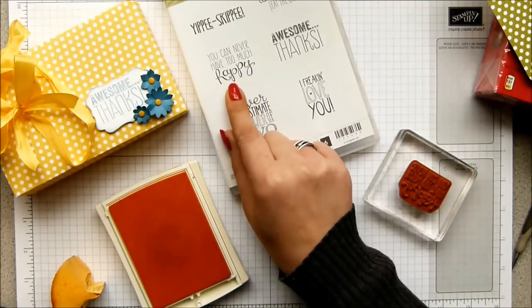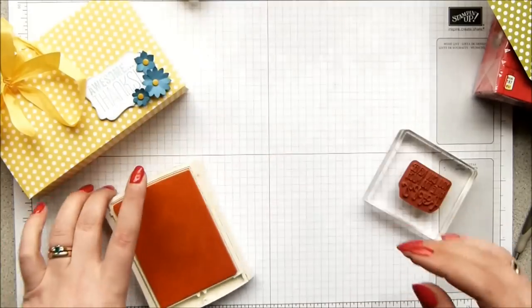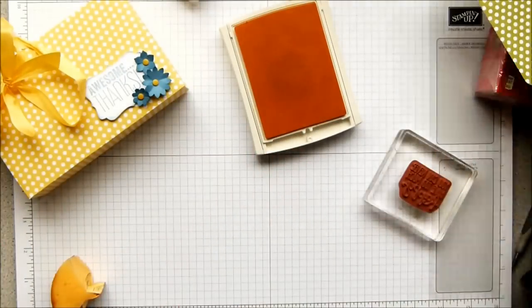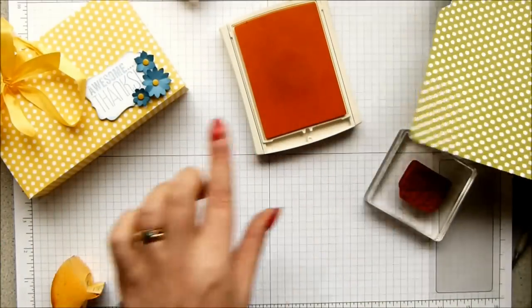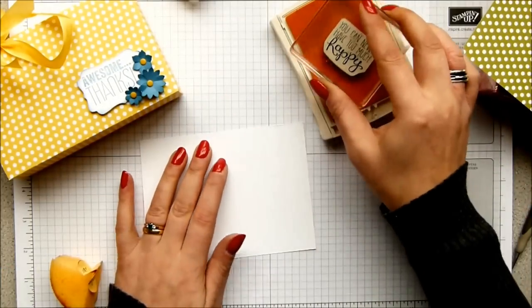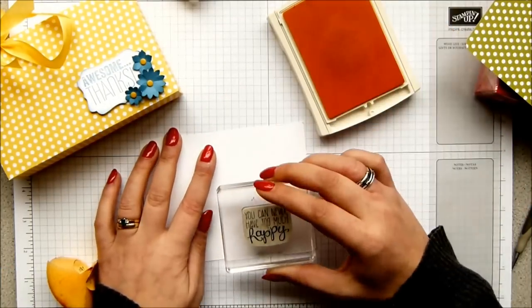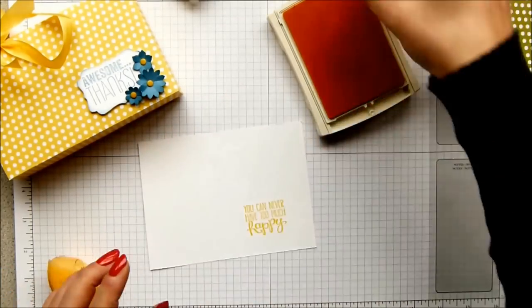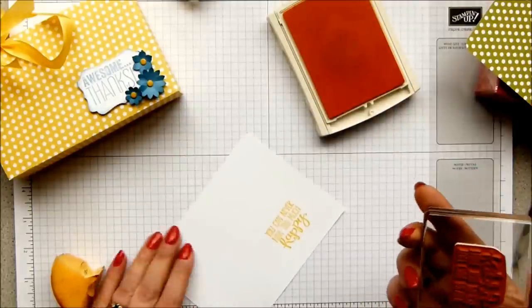So I chose Yippee Skippy because it's got all these great sentiments and phrases with it. And I've gone for this one: you can never have too much happy. Love it. So I've got Daffodil Delight ink here, this is Old Olive, this polka dot paper, and this was Daffodil Delight here. So I decided to keep with a sort of summery theme.